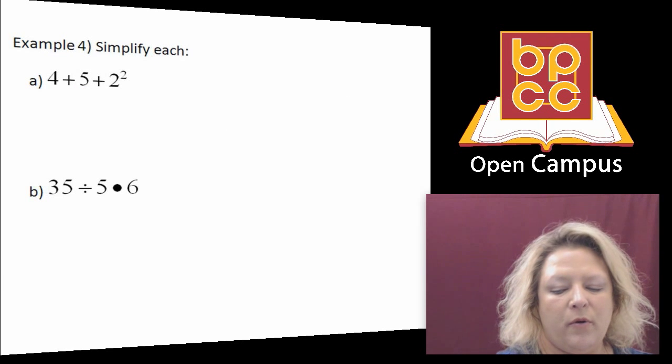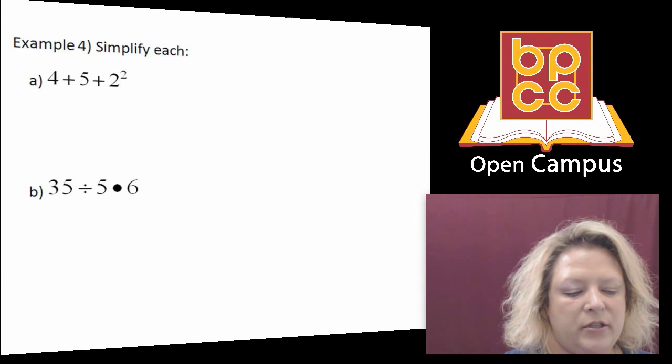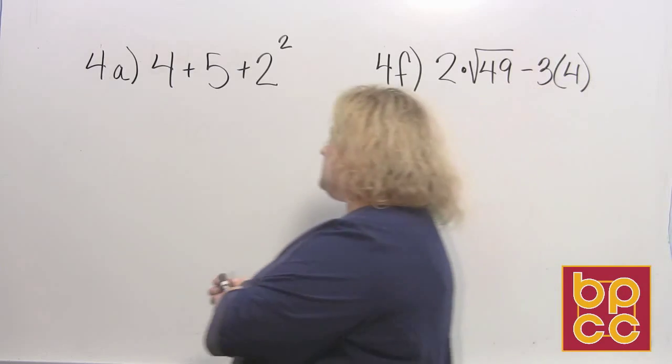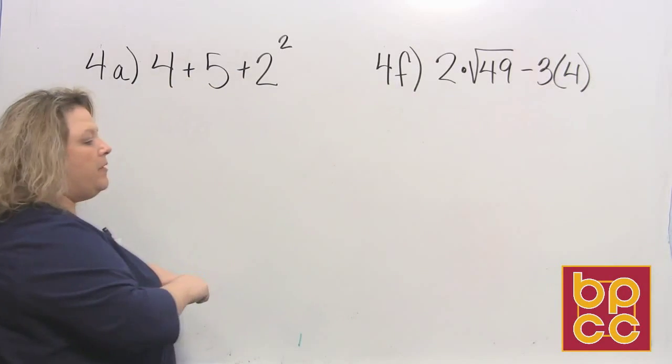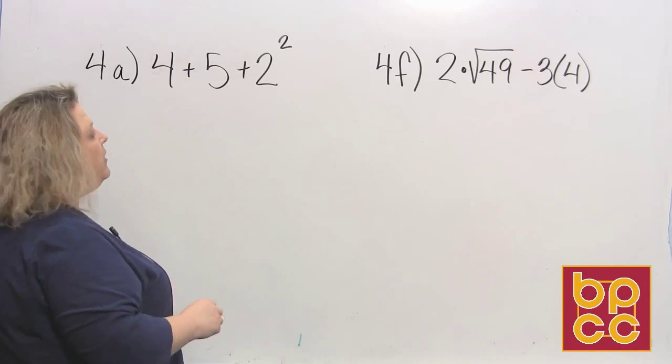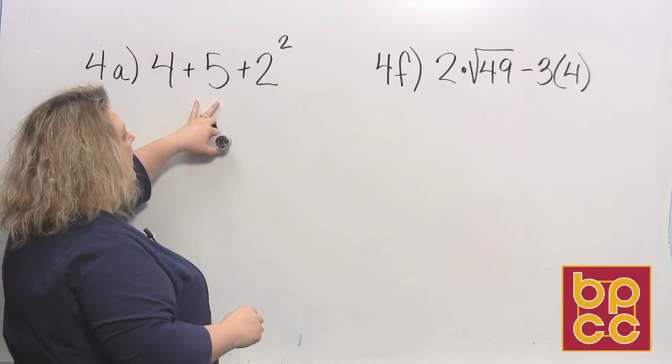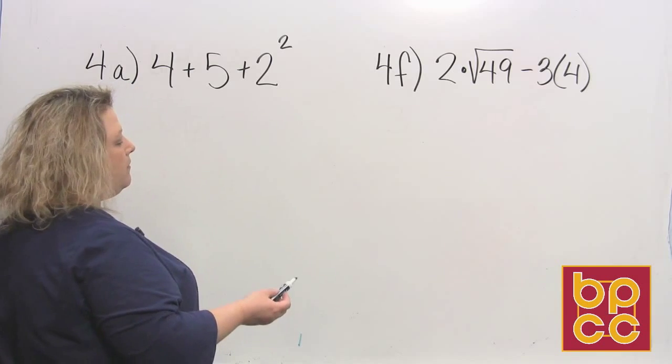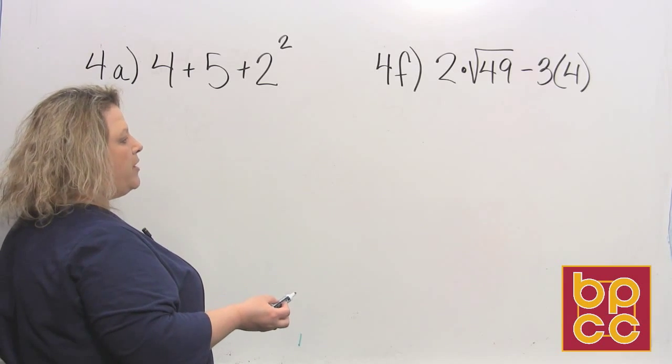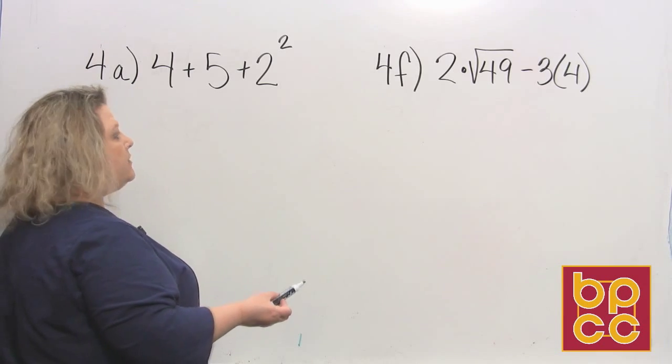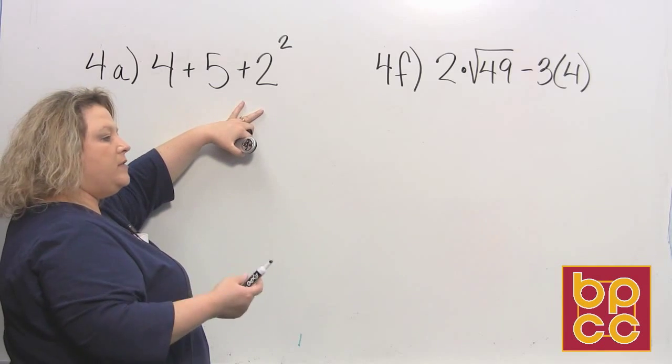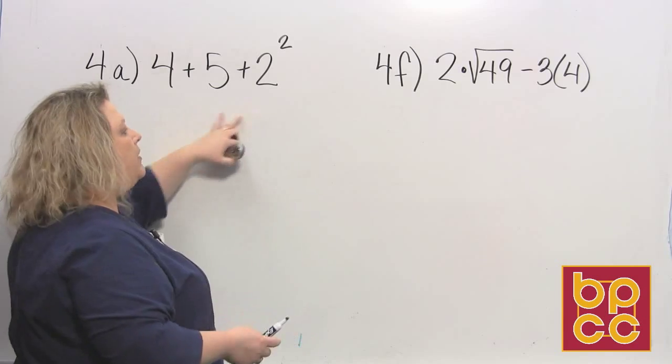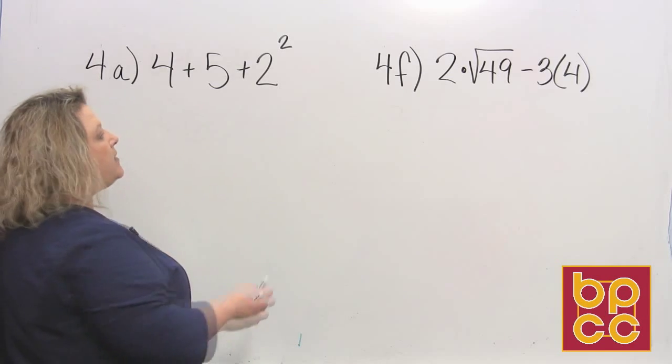I'm going to work a few examples up here on the board for you. The first one we're going to do is 4 + 5 + 2². When you talk about order of operations, P is parentheses. Nowhere in this problem do I see parentheses, brackets, or square roots, so I can skip that step. Next, we look for E—exponents.